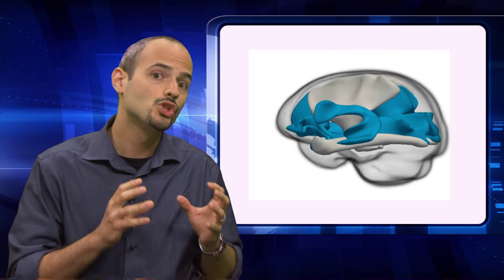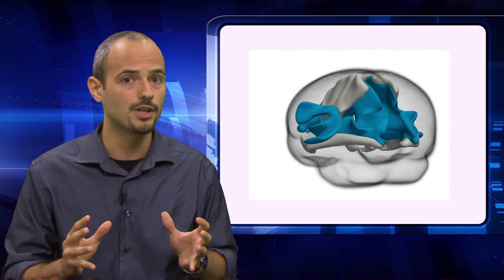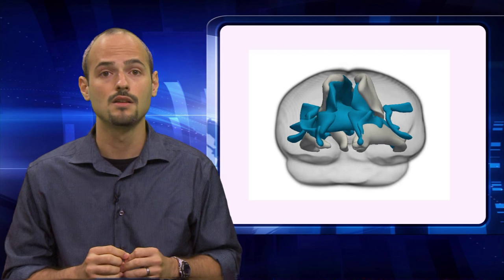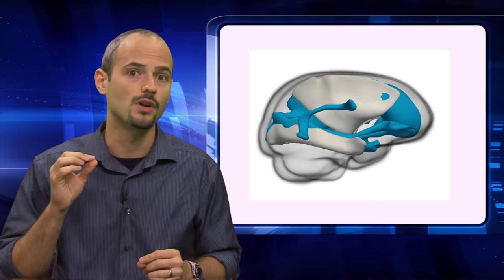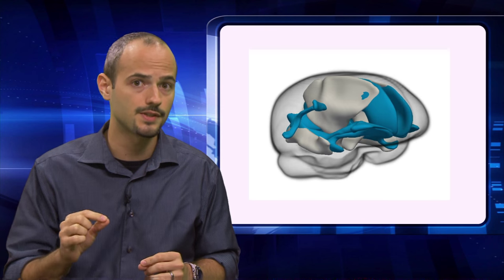Now, people have shown in the literature that the radial component is related to myelin. Myelin is an insulating sheet in these connections, and it's crucial for proper functioning of the nervous system. So we see that these different properties, the RD properties, could be a potential target for future genomic studies.